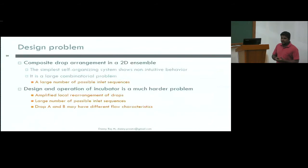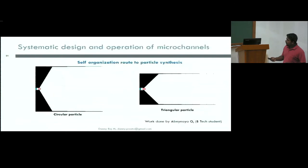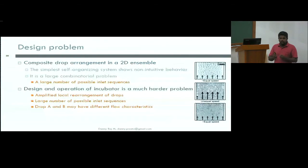The point to take from this is droplet motion inside a 2D channel is complex. Even the simplest self-organizing system shows non-intuitive behavior. And it's a very large combinatorial problem because given a number of drops of A and B, there are so many different ways in which you can send these drops in. If you take the real problem, which is the design and operation of an incubator, it's a much harder problem to solve because the self-organization in those cases is much more complicated with a lot of mixing. And drops A and B may flow differently themselves. All this points to the fact that you need a systematic approach for design, which will be an optimization route to solving these problems.